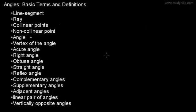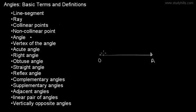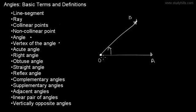An angle is formed when two rays start from the same endpoint. We have one ray starting from point O called ray OA, and another ray starting from the same endpoint O called ray OB. This is called an angle. The common endpoint O is called the vertex of the angle.